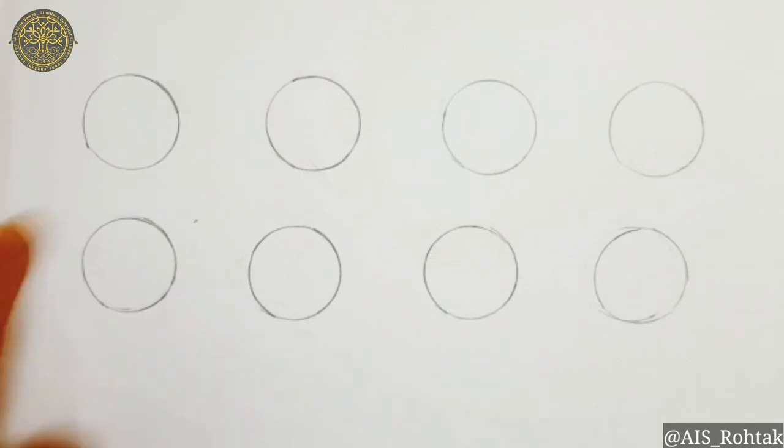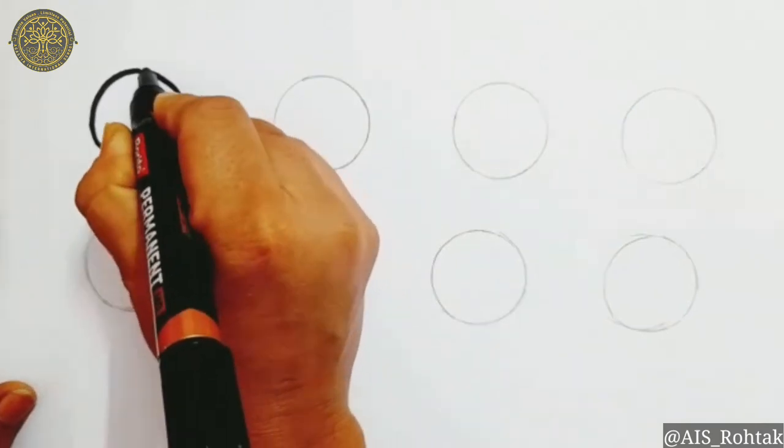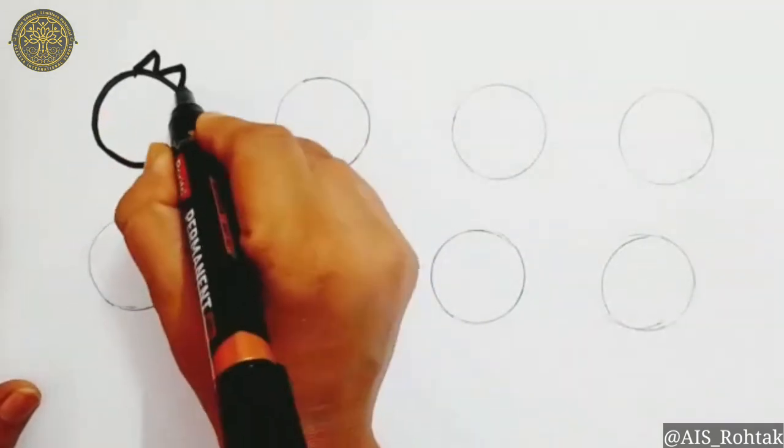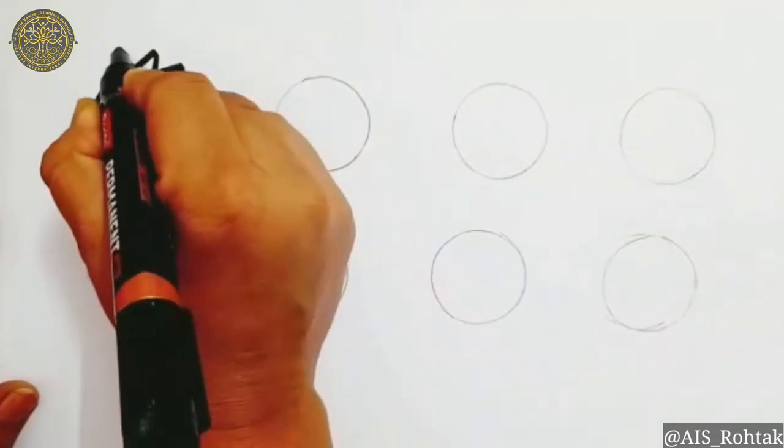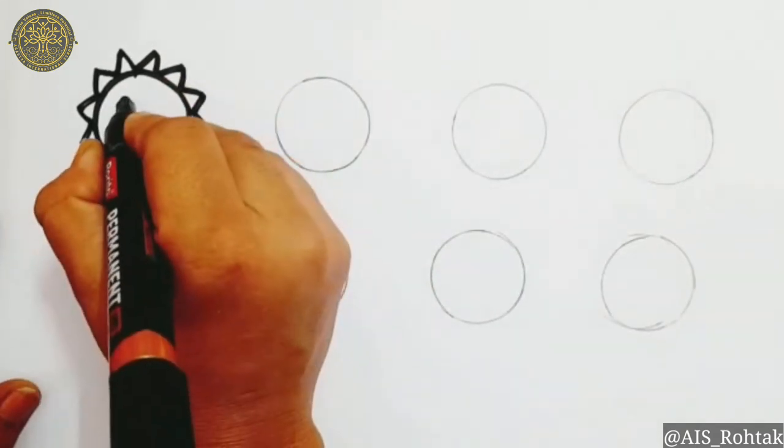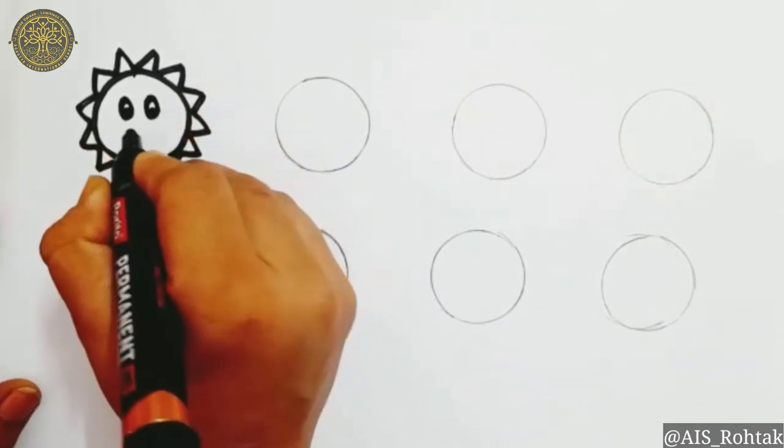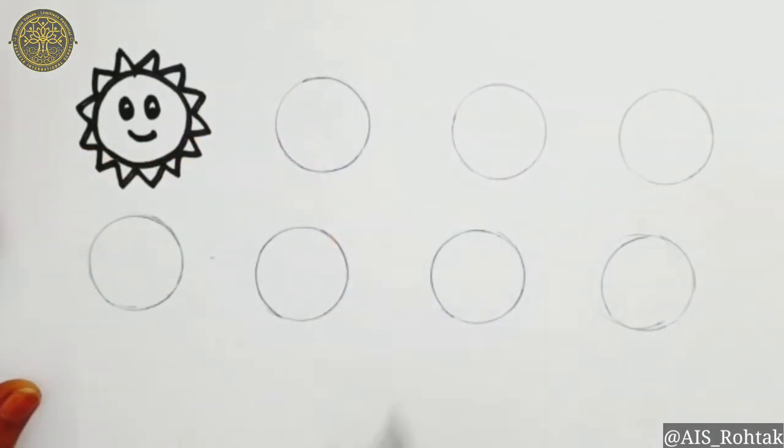For circle shape drawing, draw some circles. We are going to make sun first. Do outline. Now draw V shape. Then draw the eyes of the sun. Just draw our shape. And one dot in the eye and a smile. Our sun is ready.